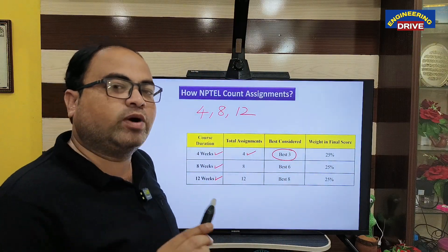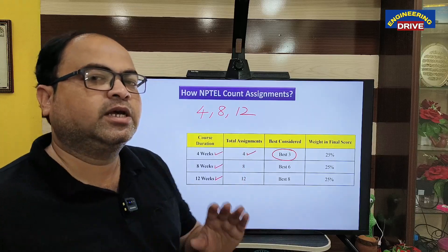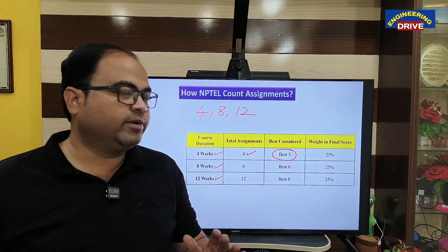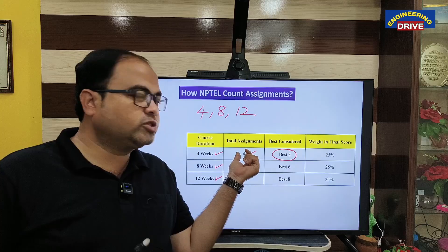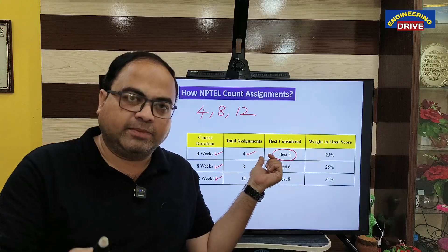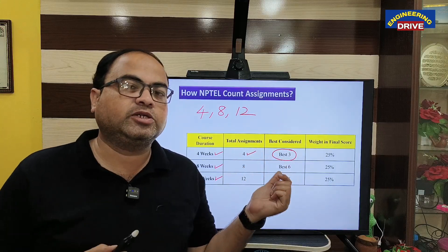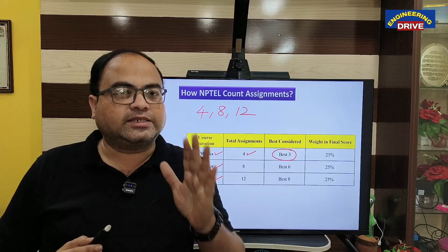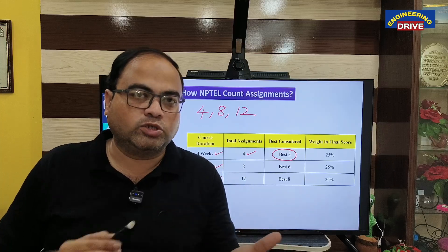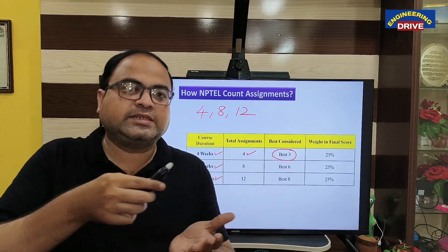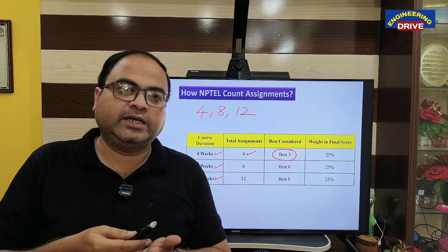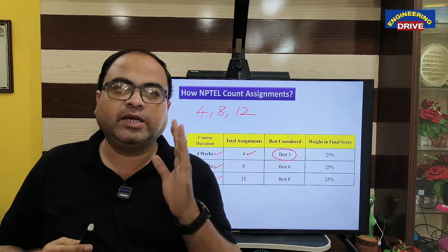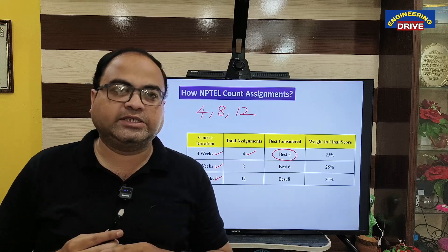NPTEL, out of 4, will consider only the best 3 assignments. What is the meaning of best 3 assignments? If you submit 4 assignments, NPTEL will take the assignments in which you got the highest scores — those 3 assignments will be taken into calculation and the final average will be finalized.